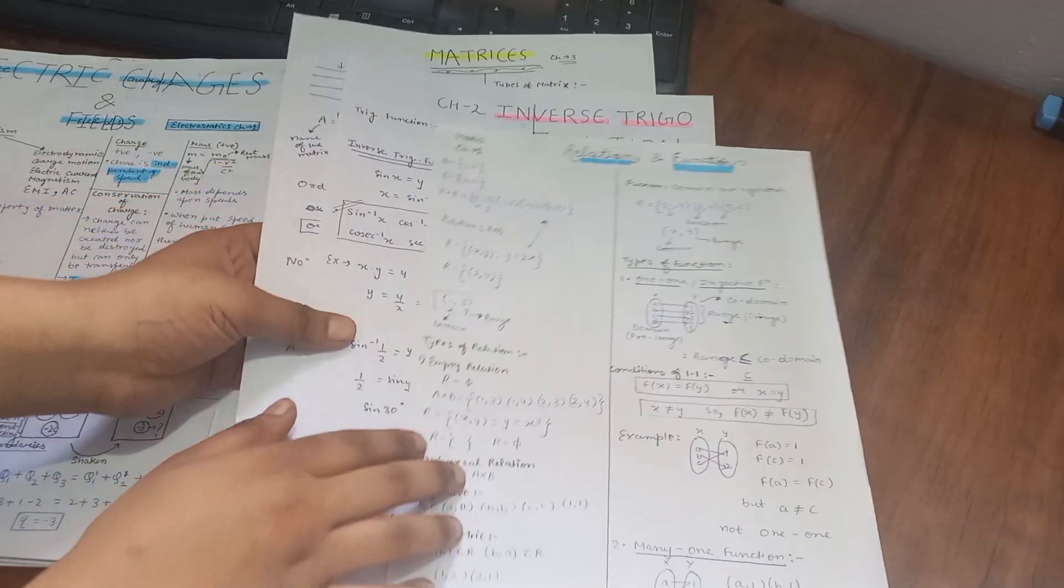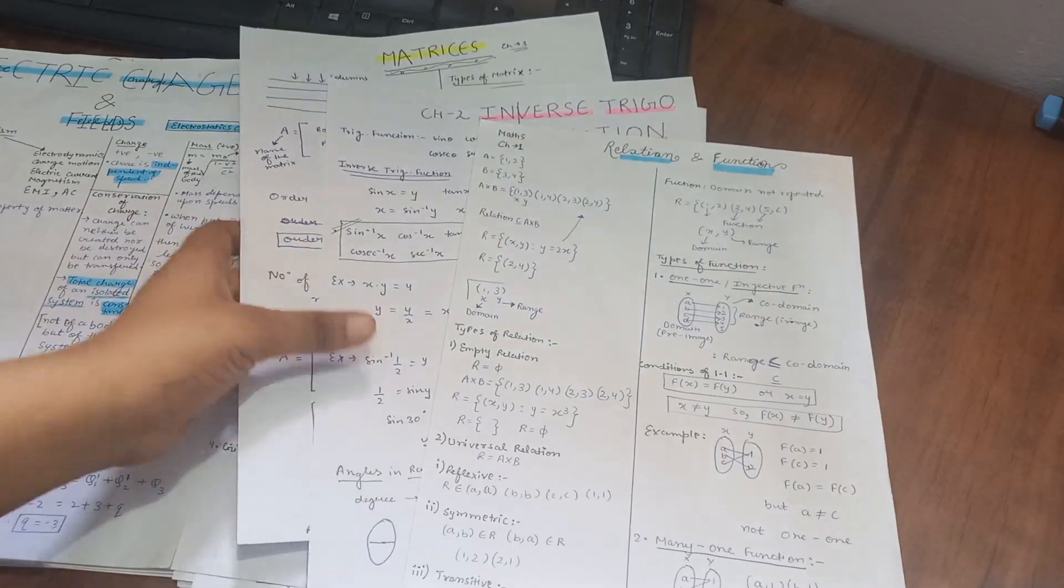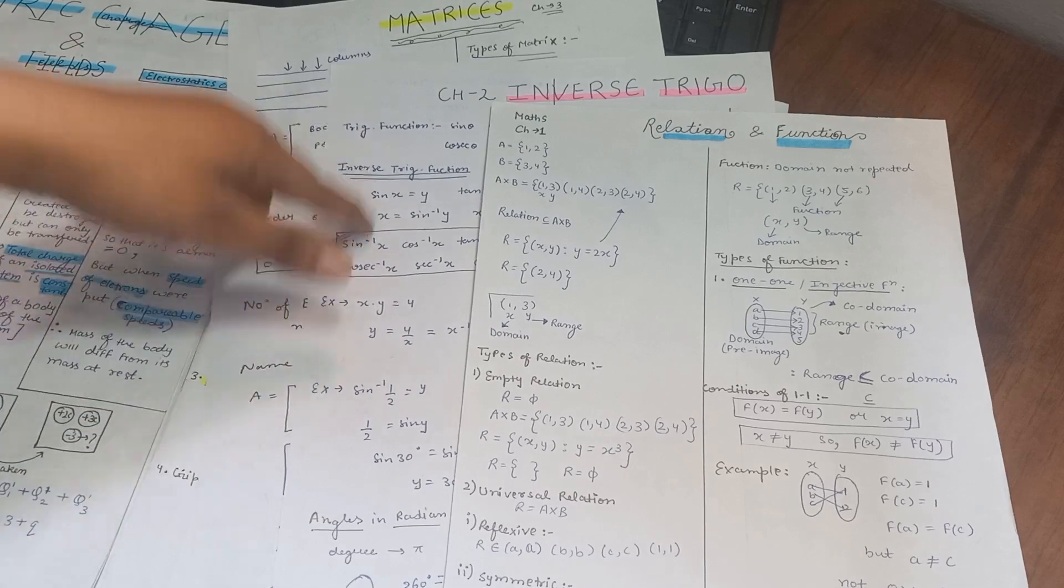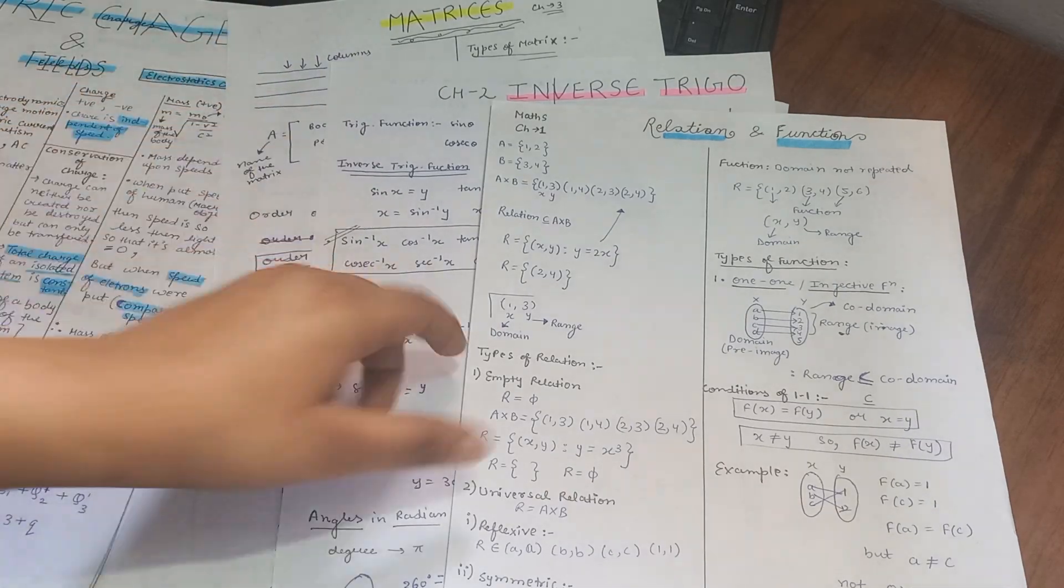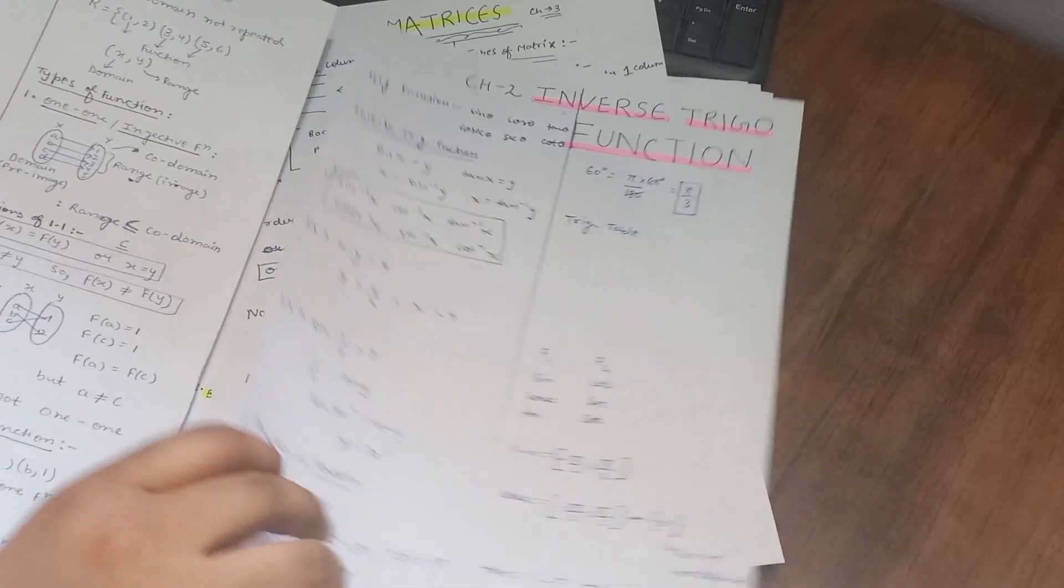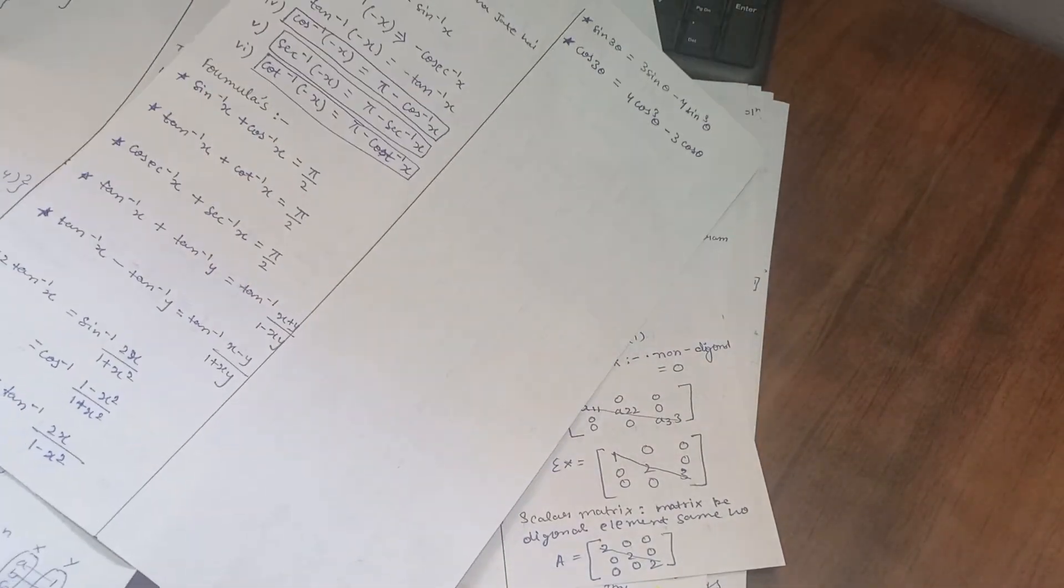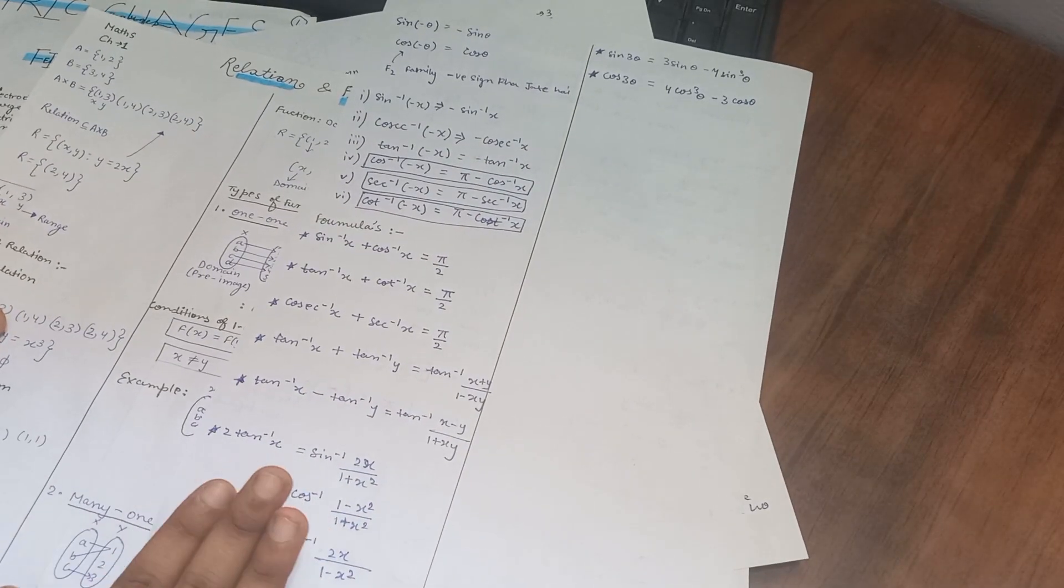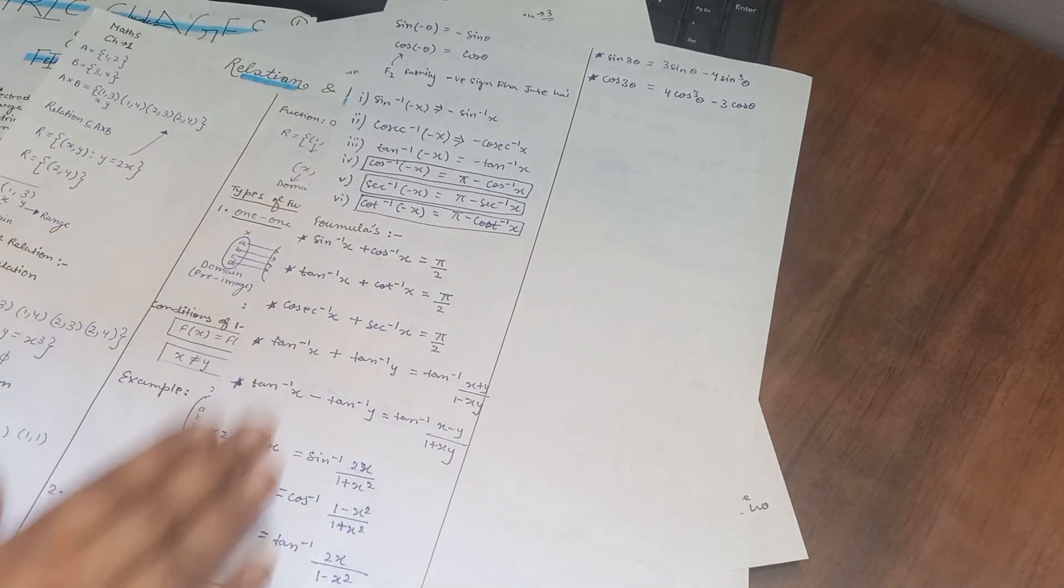And now these are for maths. I studied only three chapters - relation and function, inverse trigonometry, and matrices. These are the one-shot introductions. Every single formula I have written so that I don't have to make any formula booklet. At the end it's just right here.